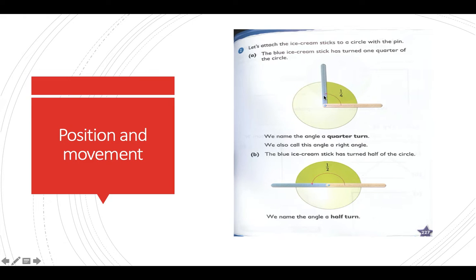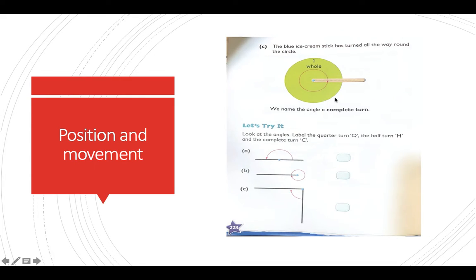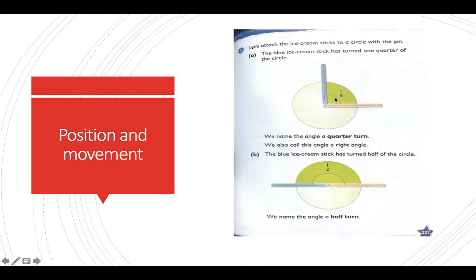If one is at twelve and the other one is at three, this is called a quarter. So this is called a quarter circle. We name the angle a quarter turn. We also call this angle a right angle.